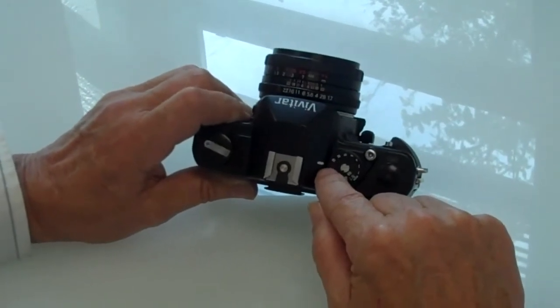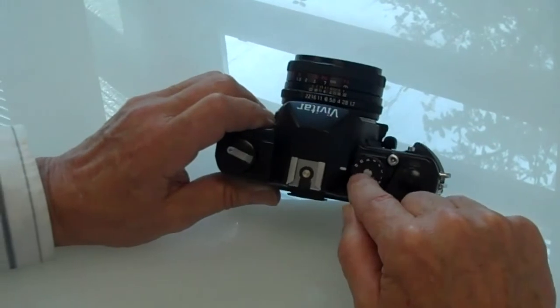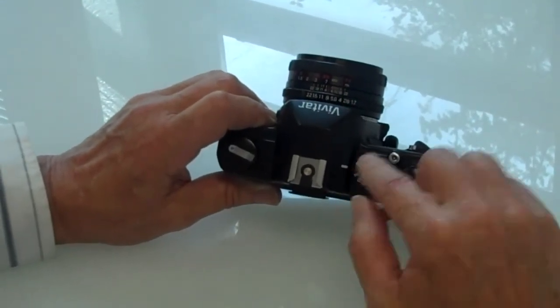You've got your film speed at ASA 400 and your shutter speed at 125th of a second.